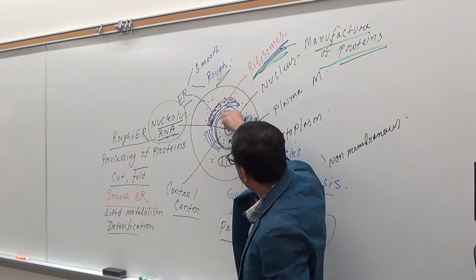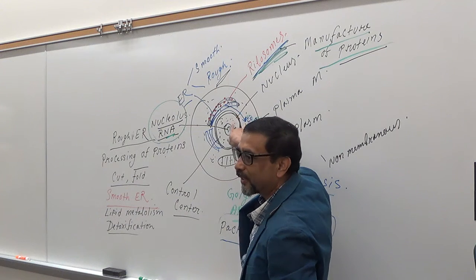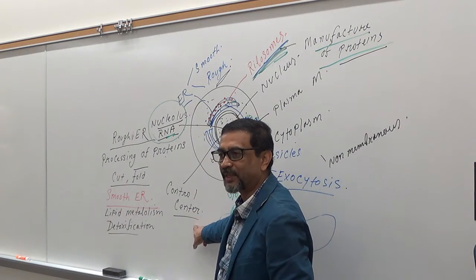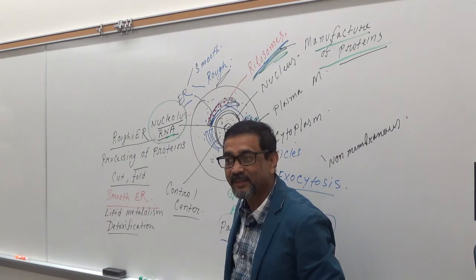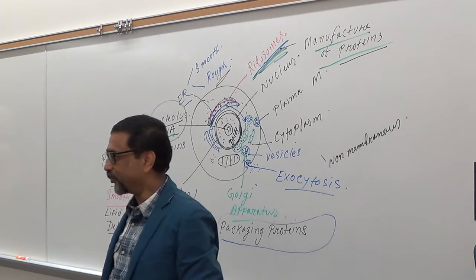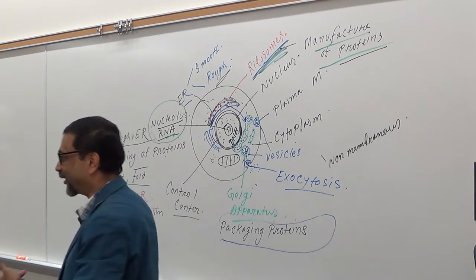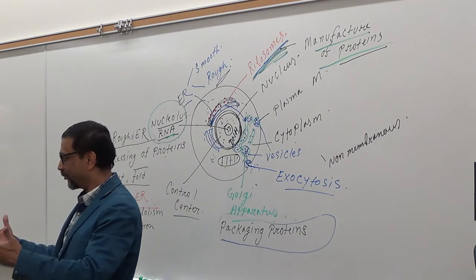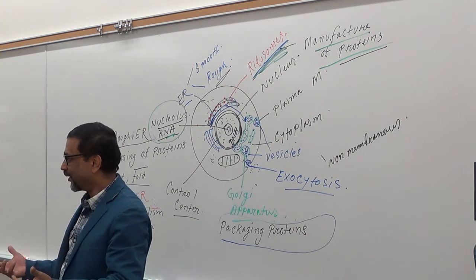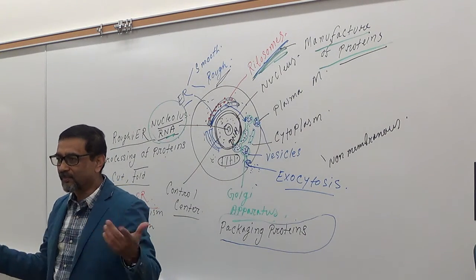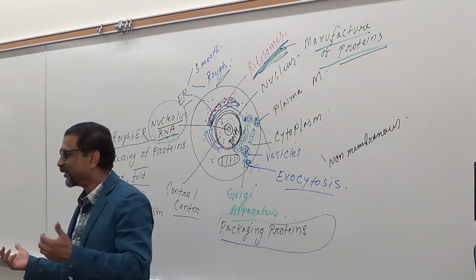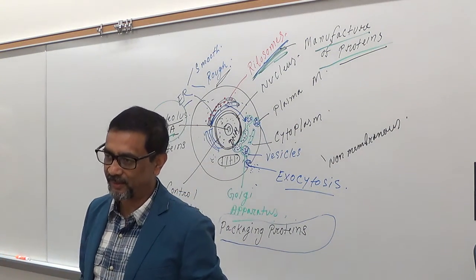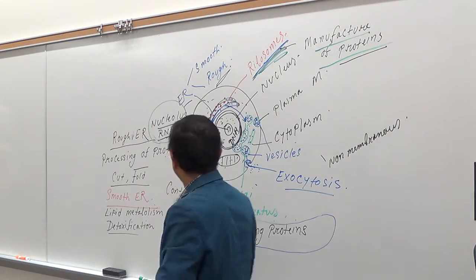The nucleus is called the control center because it has DNA — very important genetic material — and it controls metabolism, cell division, and protein synthesis. The behavior of the cell is controlled by DNA.